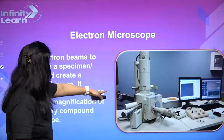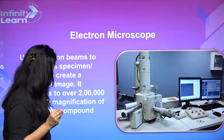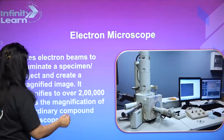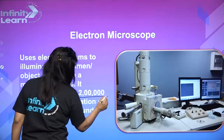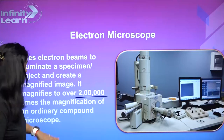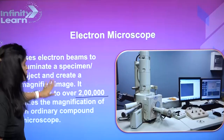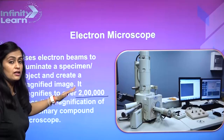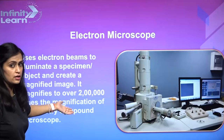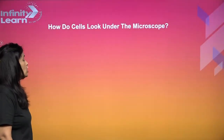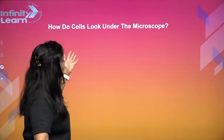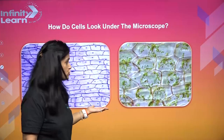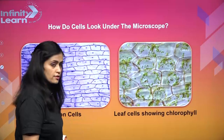Then comes the electron microscope. This electron microscope is so efficient that it can magnify near about 20-30 times more than a common or ordinary compound microscope. So, how do cells look under the microscope when you have placed a specimen?